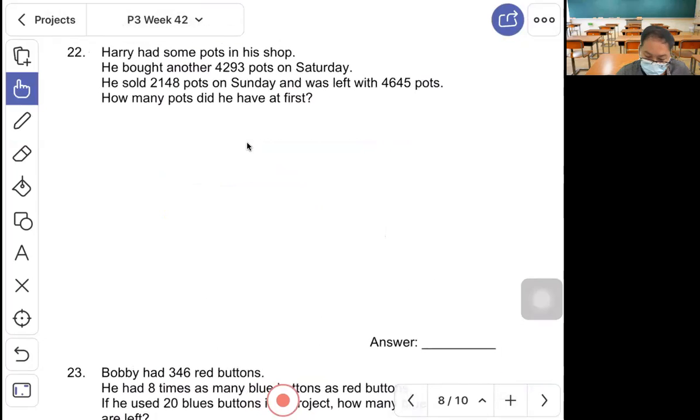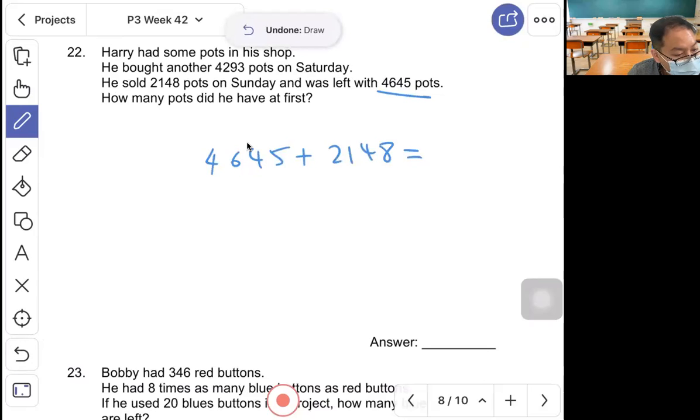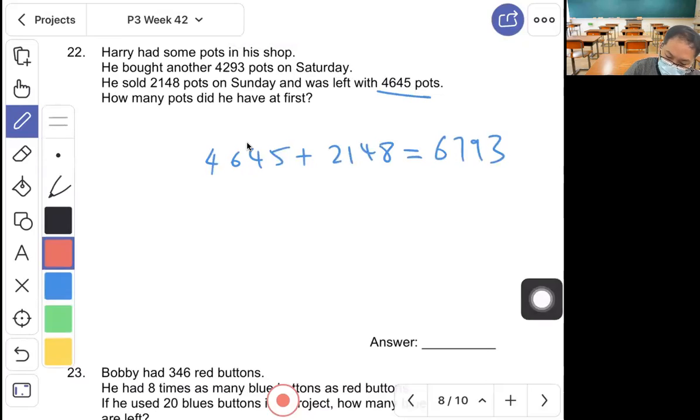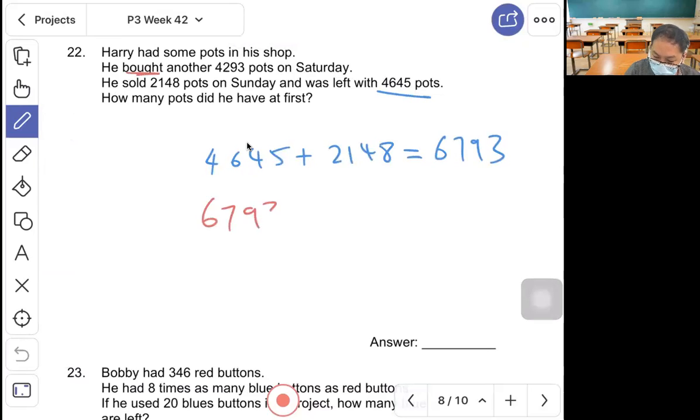Question 22, Harry has some cards in his shop. He bought another 4,293 on Saturday, then sold 2,148 on Sunday, and was left with 4,645. How many cards did he have at first? Work backwards: take 4,645 plus 2,148 to get 6,793, then minus away 4,293. Answer: 2,500 cards at first.